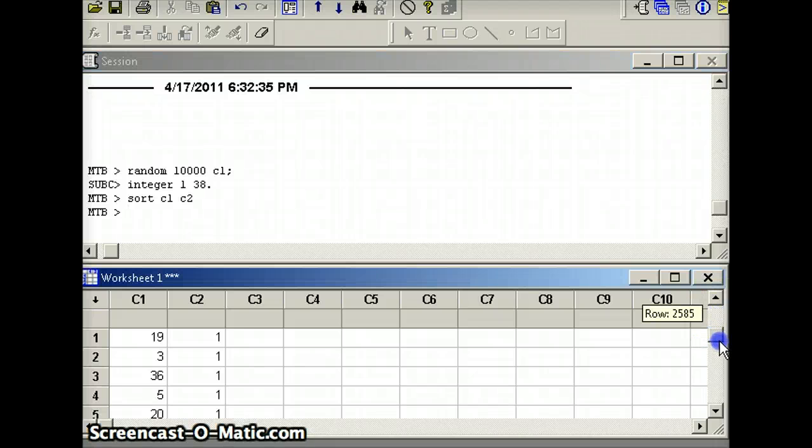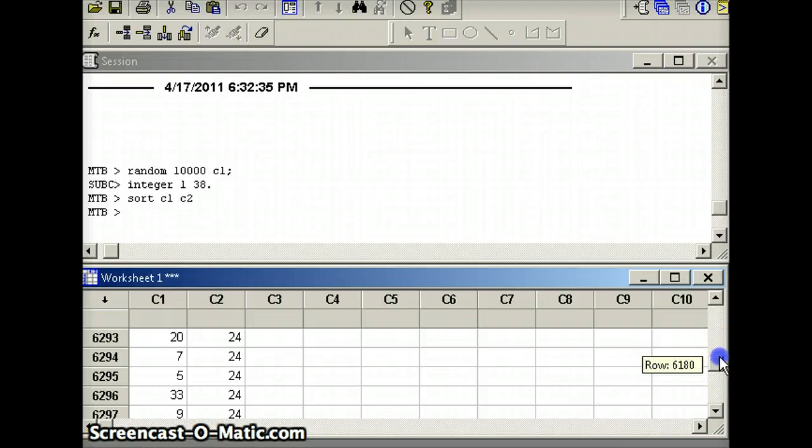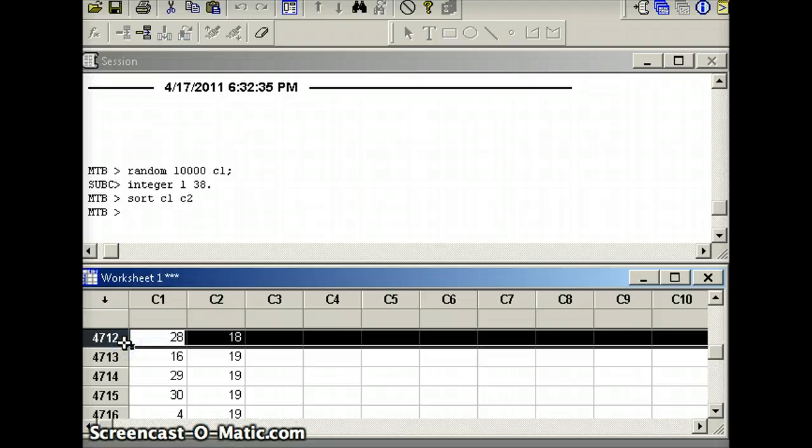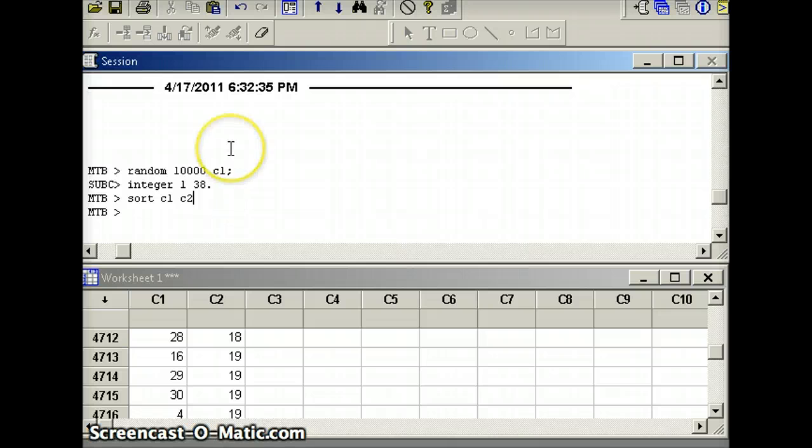How many numbers do we have less than or equal to 18? We're just going to look up the list and see what's going on. The last 18 was number 4712. So we know we have 4712 winners.